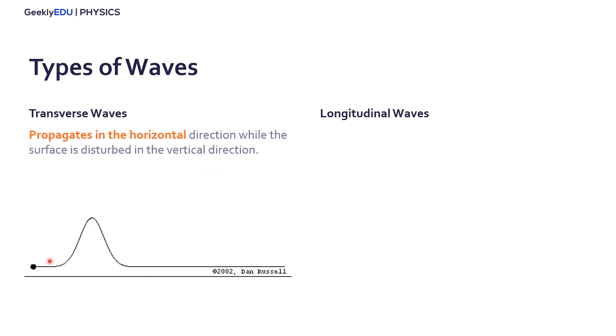We have basically two types of waves. We have the transverse waves and the longitudinal waves. All the transverse waves propagate in the horizontal direction, while the surface is distributed in the vertical direction. So a wave like this, for example, is a transverse wave propagating horizontally, but the disturbance you can see is vertical.